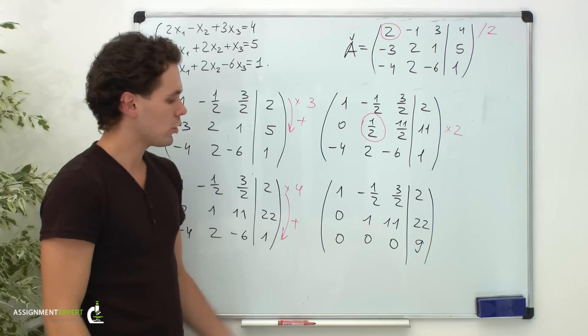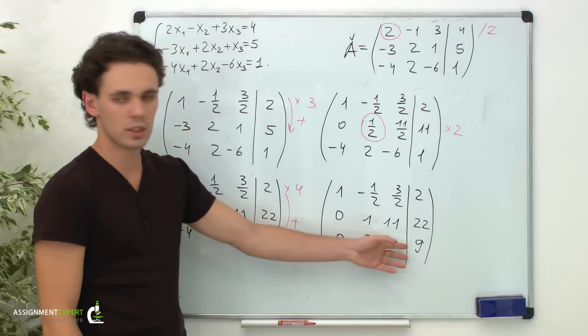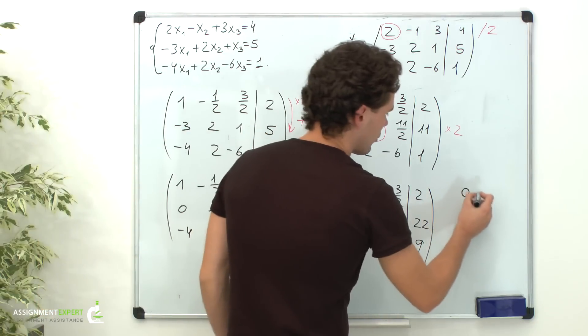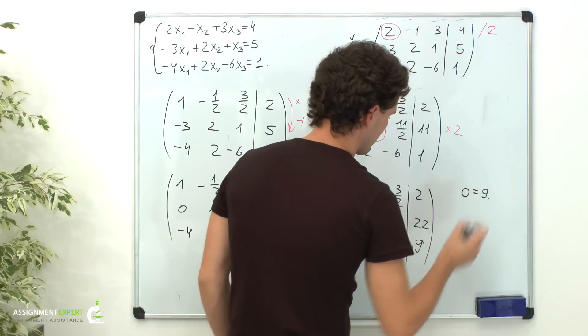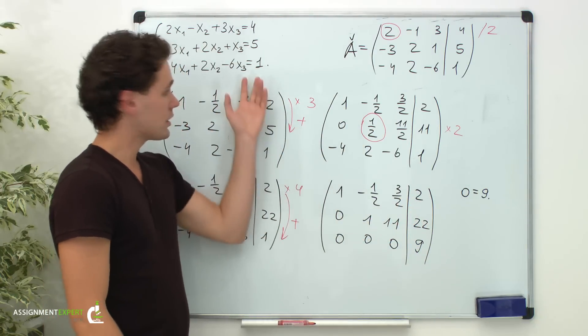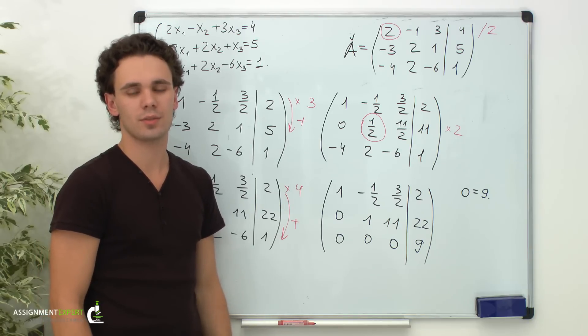Now, let's have a closer look at the matrix we obtained. In the third row, we have all zeros except the free terms. So, this is actually the equation 0 equals 9. And this is obviously wrong. So, this system has no solutions, and such systems are called inconsistent systems.